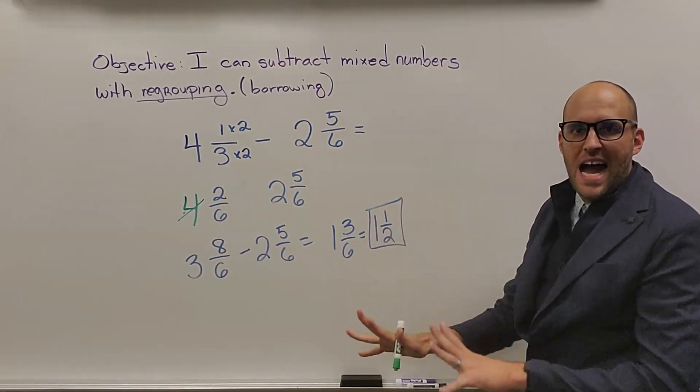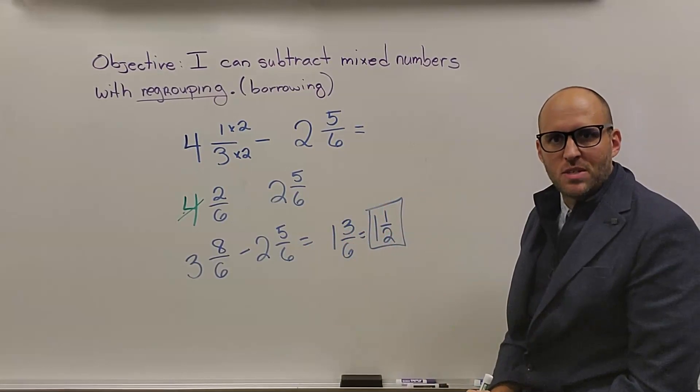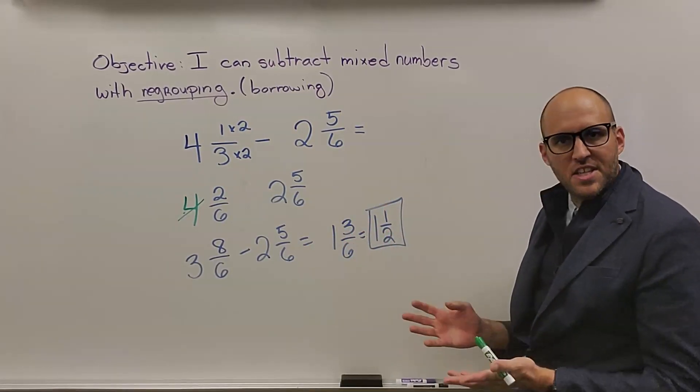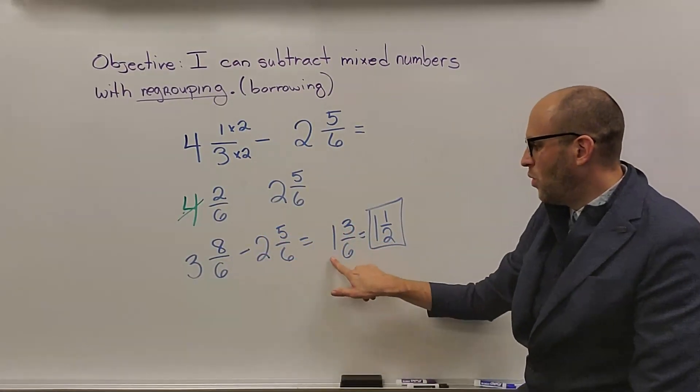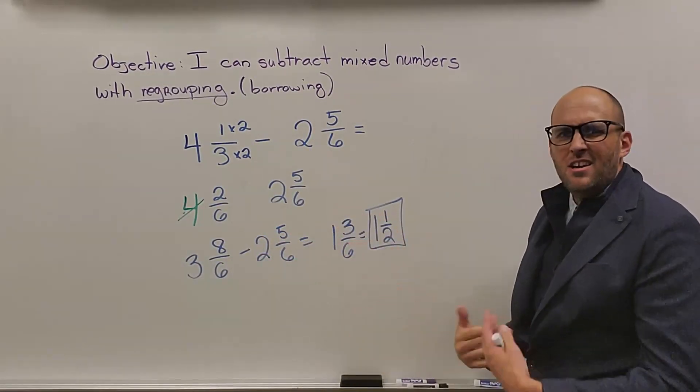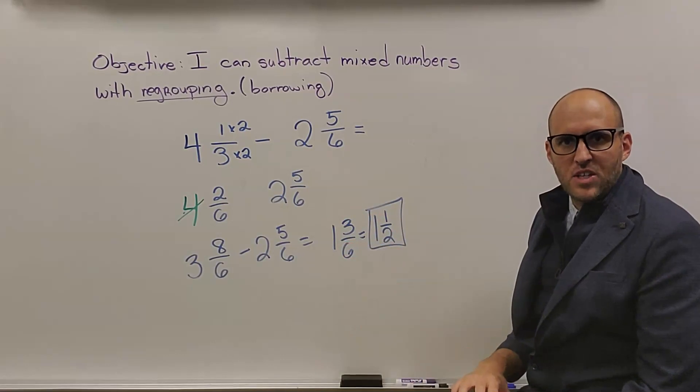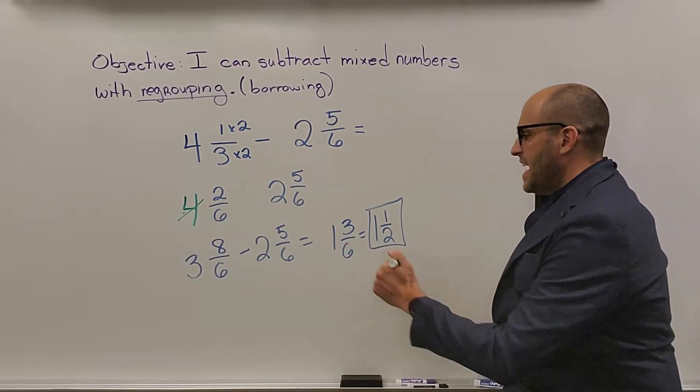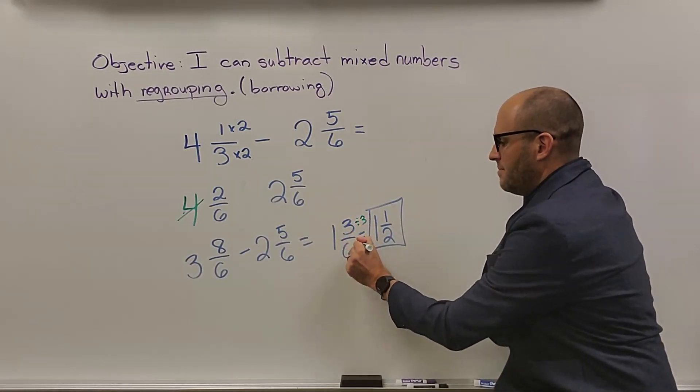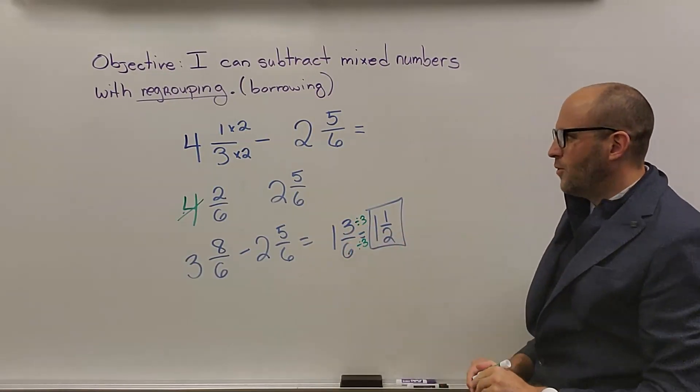That's the biggest spot where students make mistakes with subtracting and borrowing. Because everything else now is the same. 8 minus 5 is 3. 3 minus 2 is 1. 1 and 3 sixths. You're not going to have a whole lot of improper fractions with subtracting, but you'll have more simplifying. 3 is half of 6, so I can divide by 3. And that gives me 1 and 1 half.